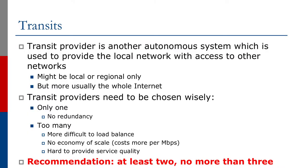Transit providers need to be chosen wisely. It's not a case of just going out there finding the cheapest or most accessible one. If you've only one transit provider you have no redundancy — we're trying to do multi-homing so that we have redundancy. If you have too many transit providers it becomes really hard, if not impossible, to balance traffic on the multitude of external links.